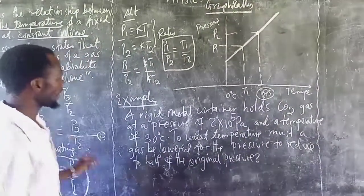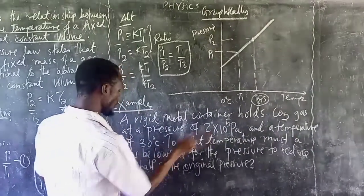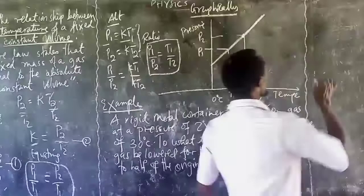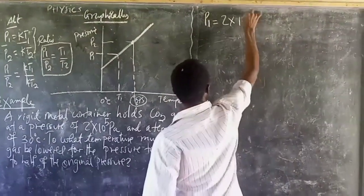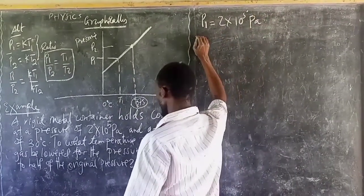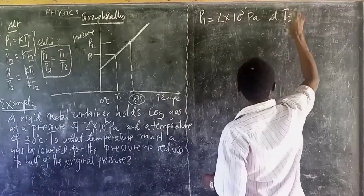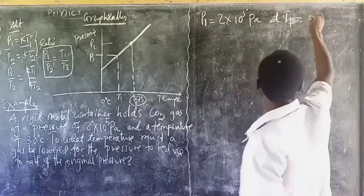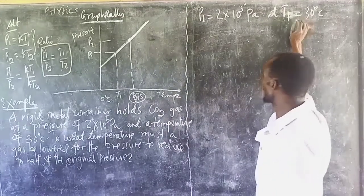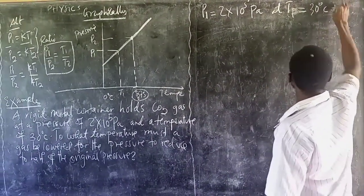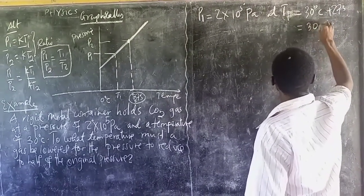Example: a rigid metal container holds carbon dioxide gas at a pressure P1 equal to 2 times 10 to the power 5 Pascals, and at a temperature of 30 degrees Celsius. You need to convert this temperature to Kelvin: 30 plus 273 equals 303 Kelvin. So the pressure of 2 times 10 to the power 5 Pascals was recorded at 303 Kelvin.